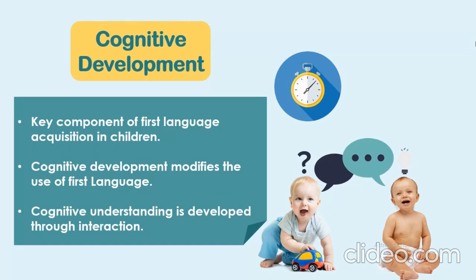Cognitive development refers to a person's thought processes and the development of mental traits. It looks at how a person thinks, perceives, gains understanding, and together with information processing, reasoning, imagination and memory, it is how a person interacts with the world from childhood through adulthood. This development has been measured and studied in a variety of ways over many years.